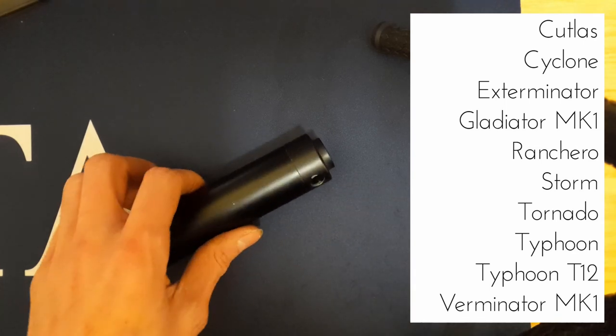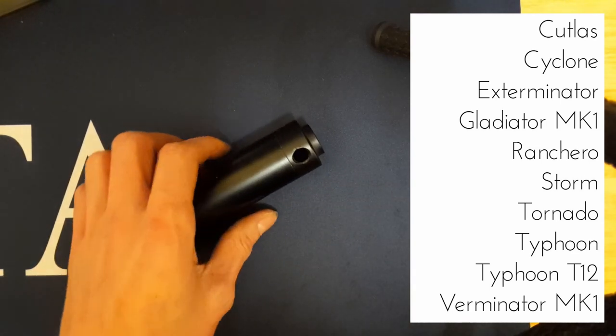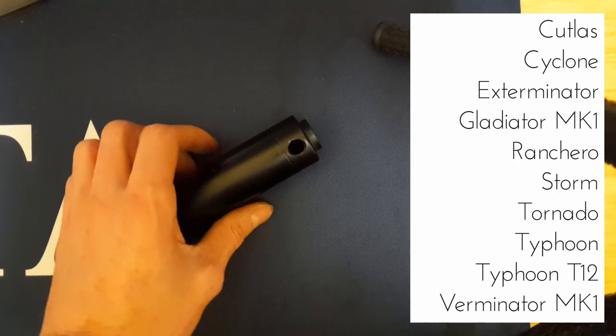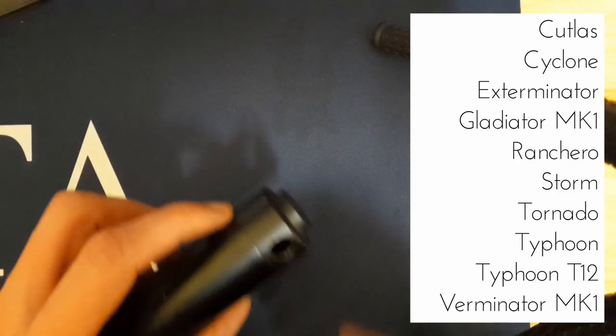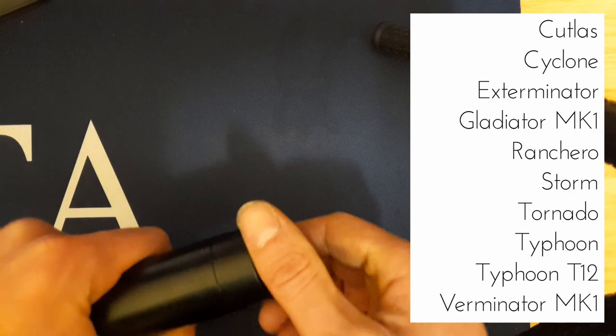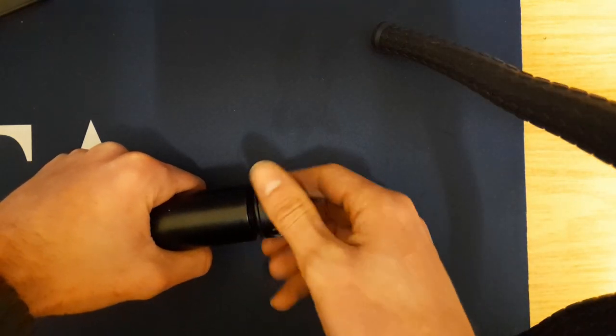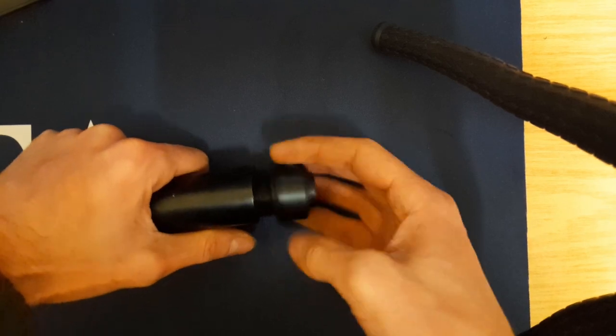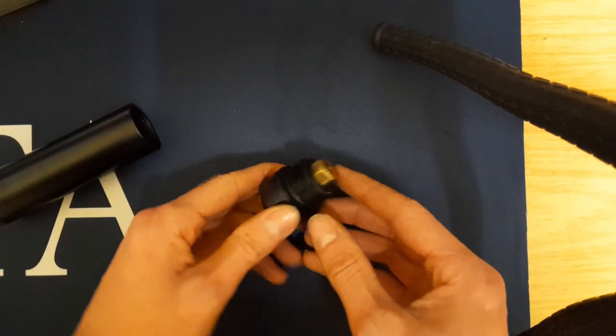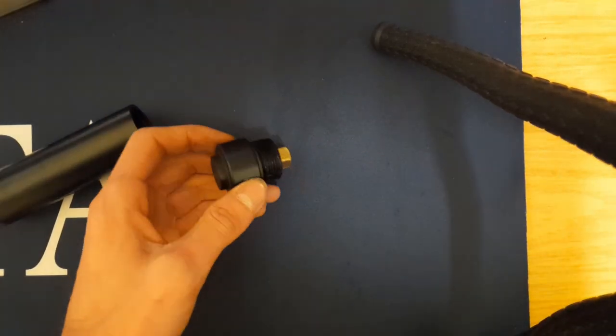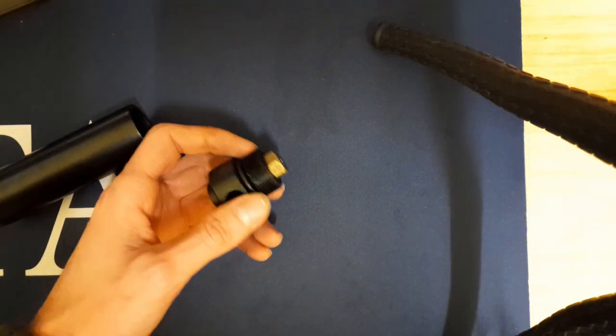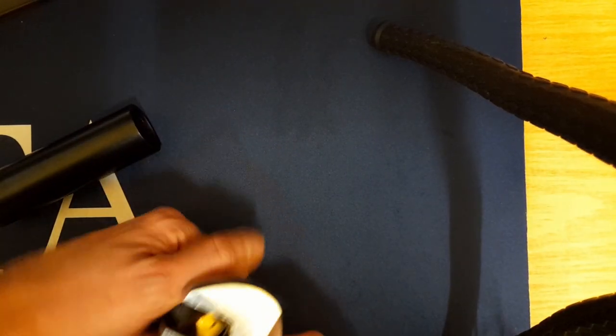Just going to crank the top off there. I've already loosened this one with a bar through there, take the end off. There's a nut here which you can just use with a spanner. Sometimes these are tight, this one I know is already quite loose, just comes off.